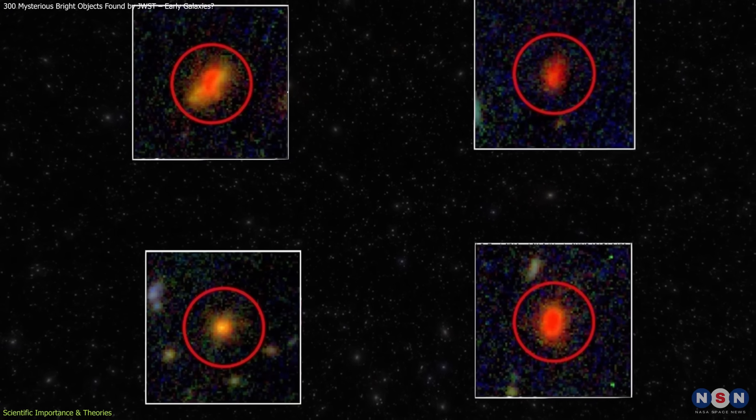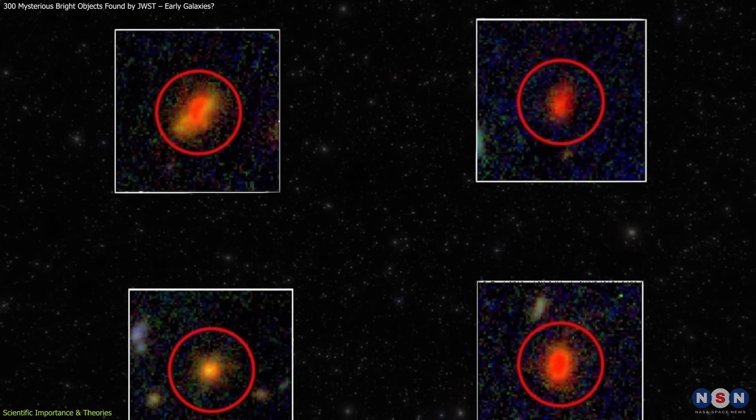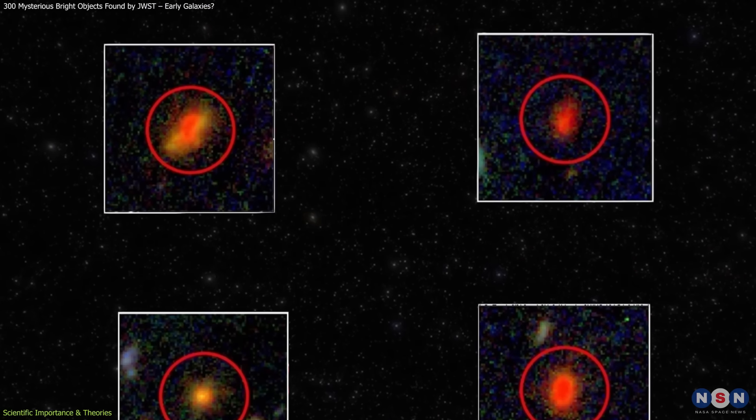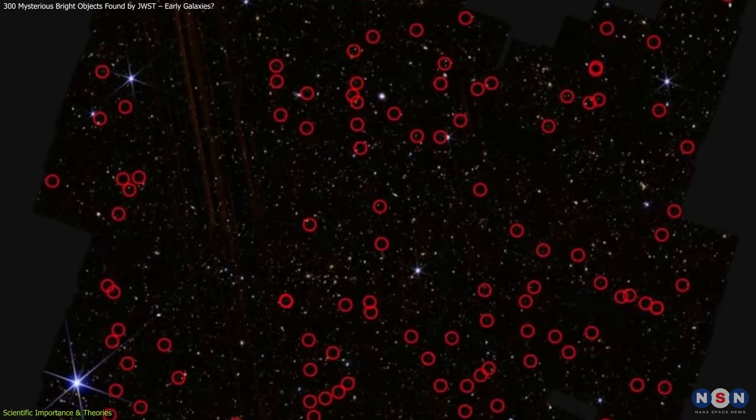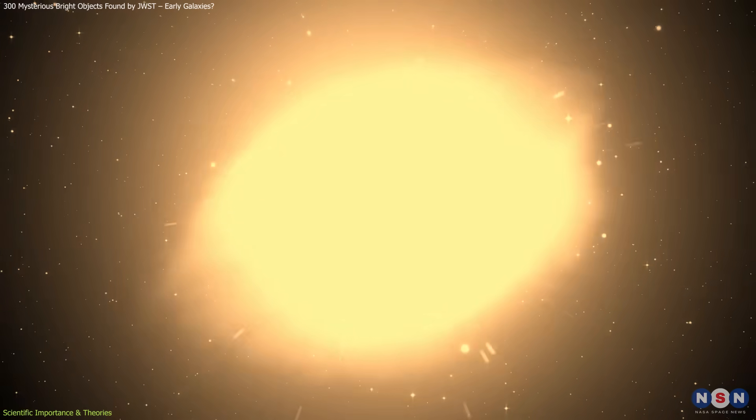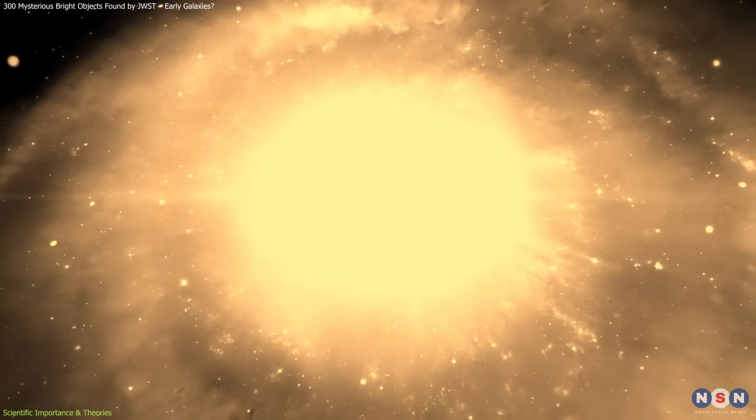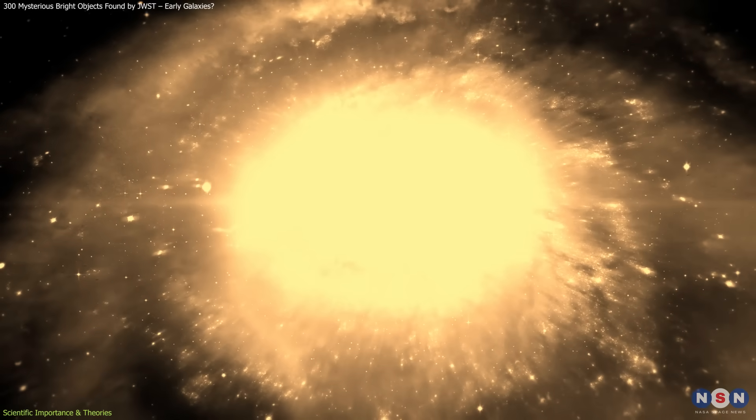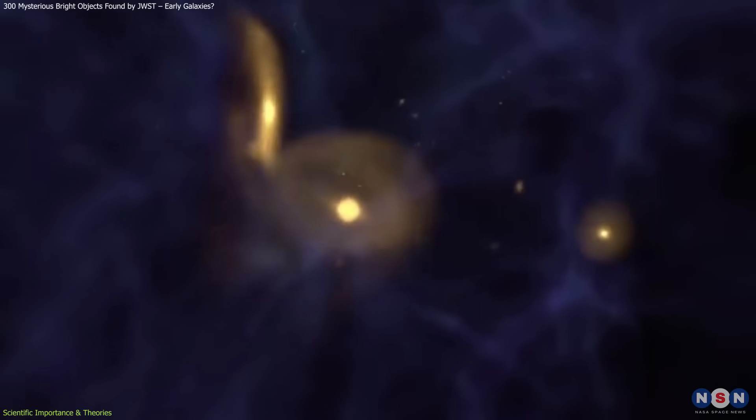These objects appear far more luminous than such models predict for their potential age. If many of these sources are confirmed to be high-redshift galaxies, it would imply that galaxy formation in the early universe was faster and more efficient than we currently believe.